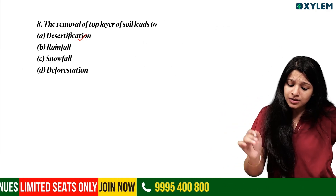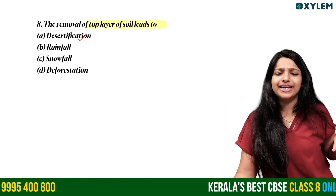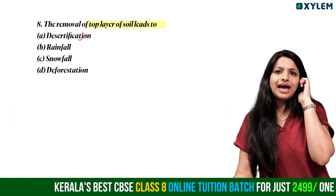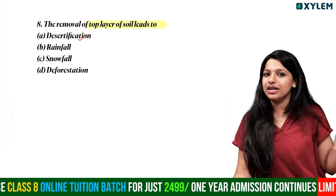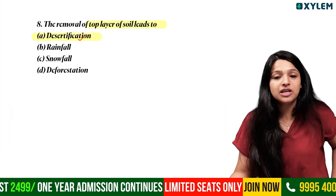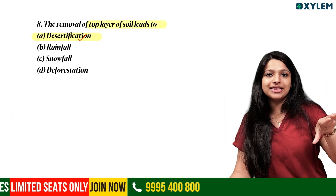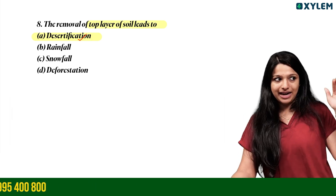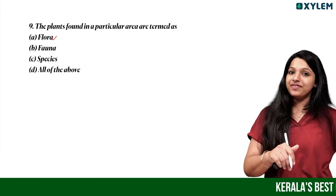Next question: Removal of the top layer of soil leads to what? When the top layer of soil is removed, we call it soil erosion, and this process is also referred to as desertification.